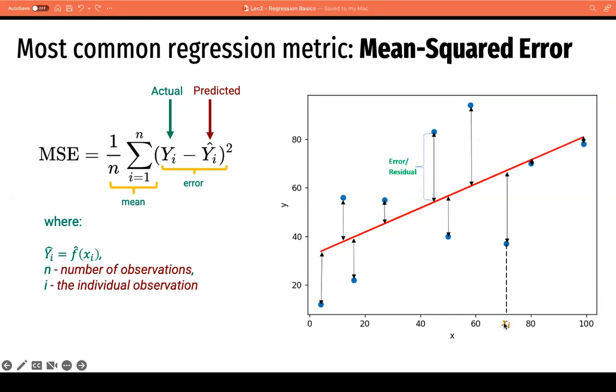Suppose we have a new value x sub i, so what will be the predicted y? Based on this line, it predicts the value of y on this point. In order for us to measure how far away it is from the actual, we can take the difference. So the difference between the actual in the predicted is the error or the residual.